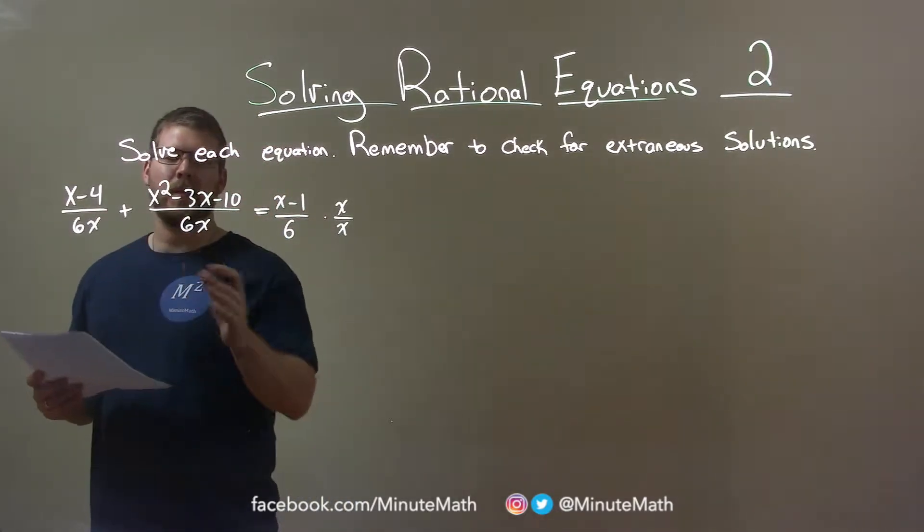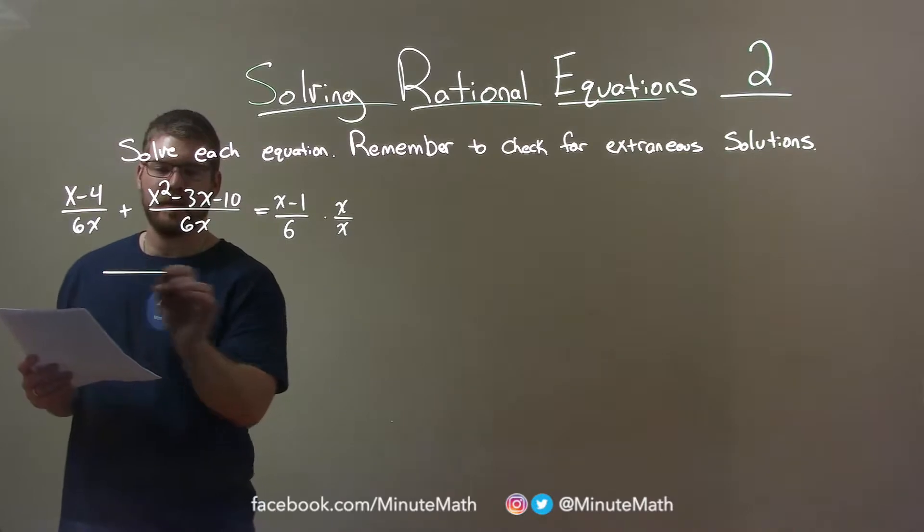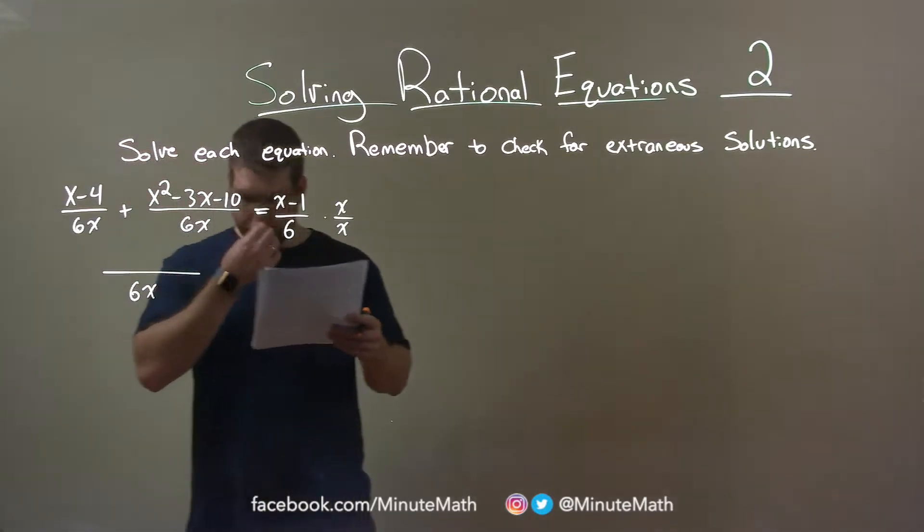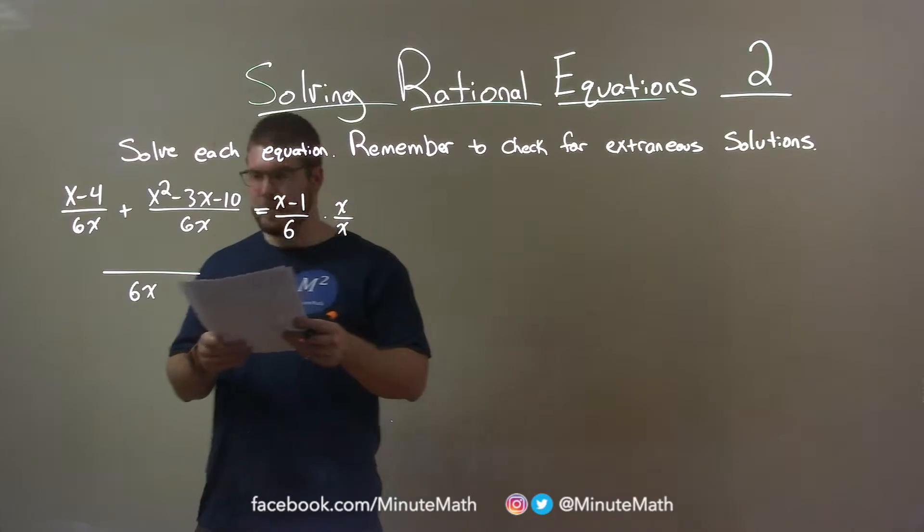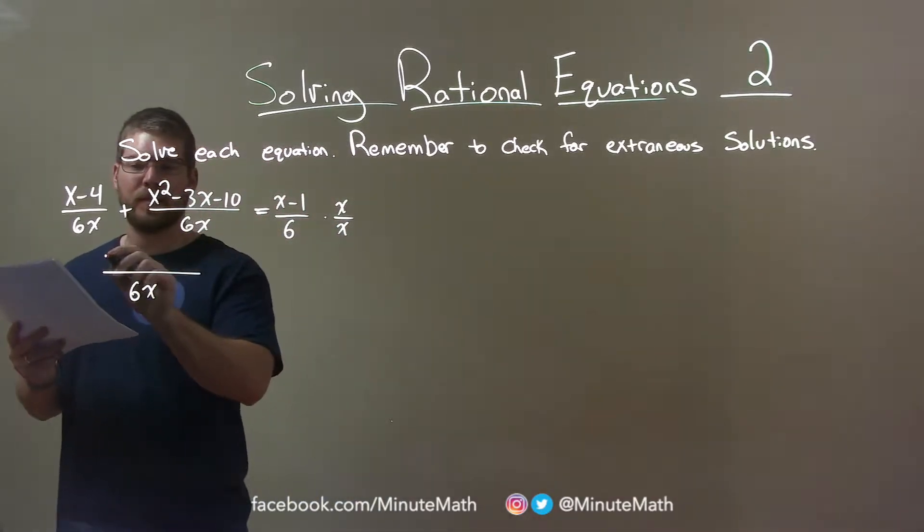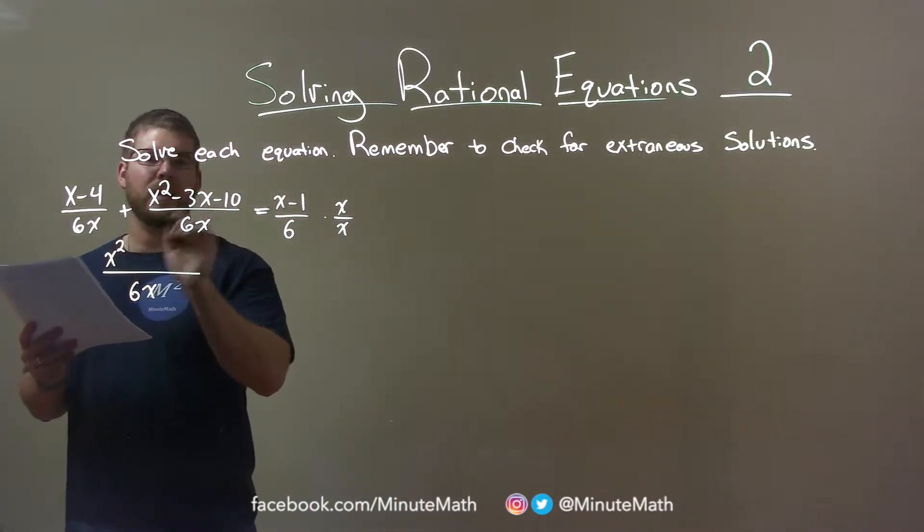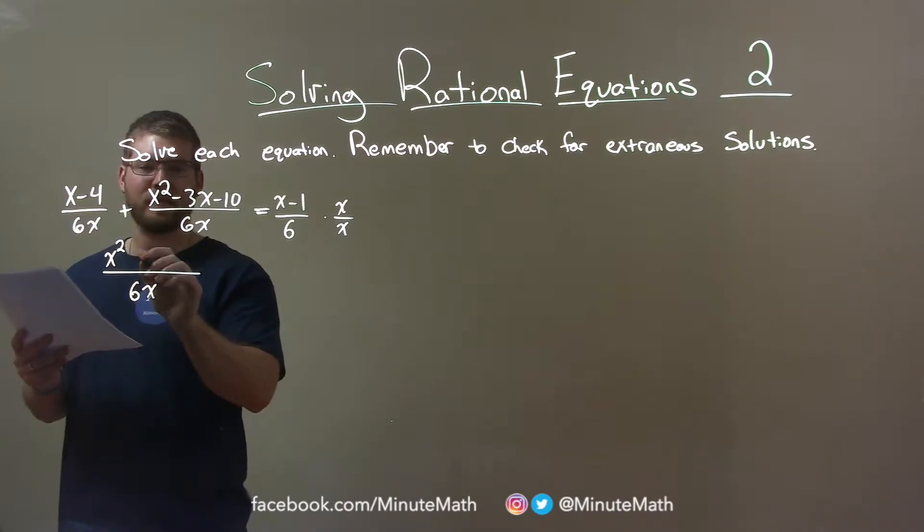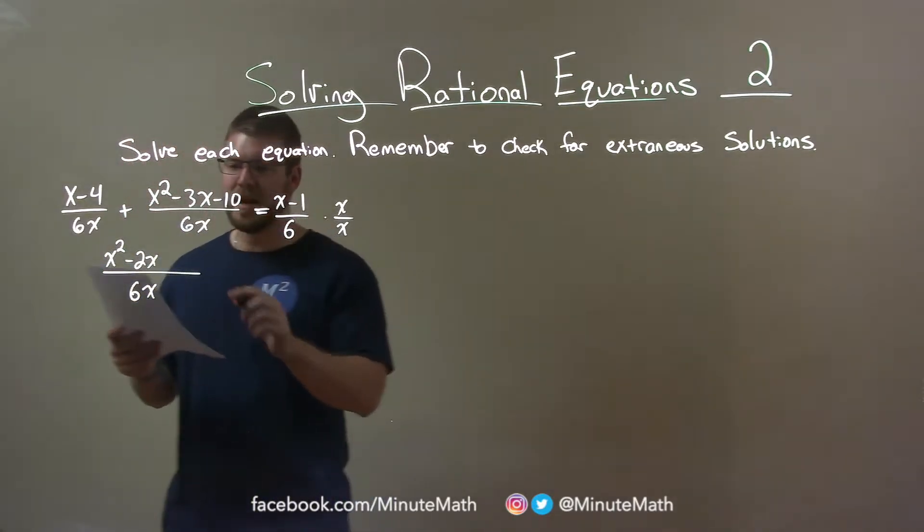Left-hand side, same denominator, let's add them together. Combine, we get a 6x in the denominator. In our numerator, we'll add our like terms. No x squared, x squared there. Negative 3x and a positive 1x to the minus 2x. Negative 4 and negative 10 and a negative 14.